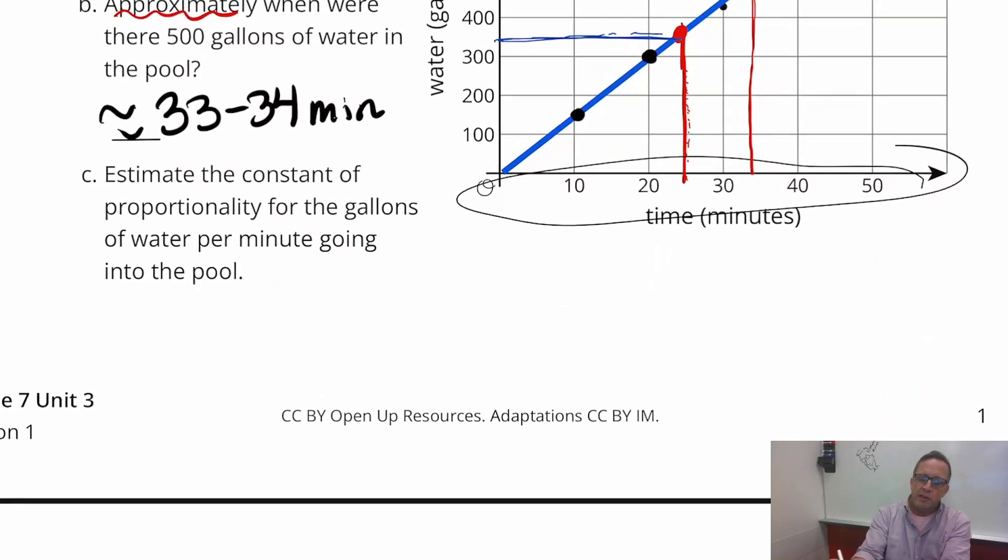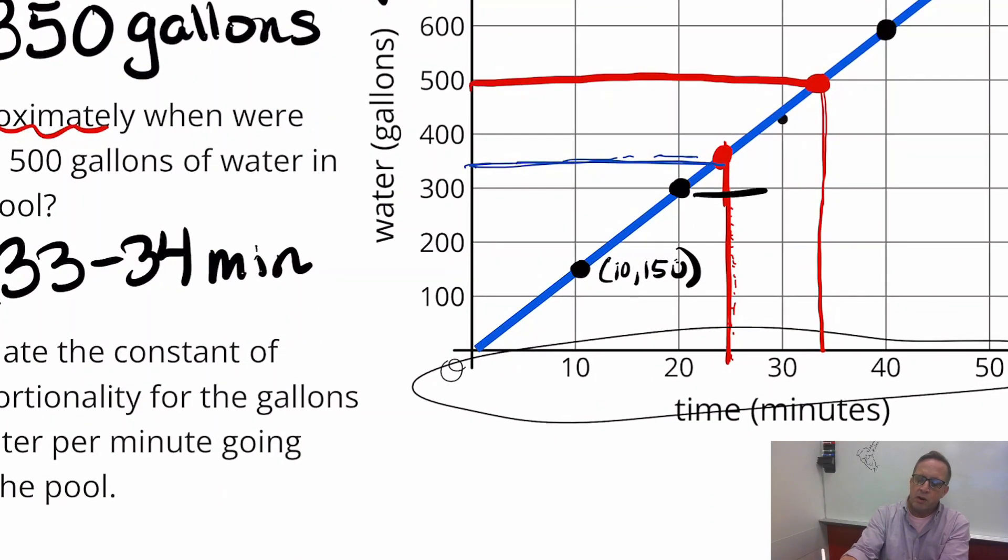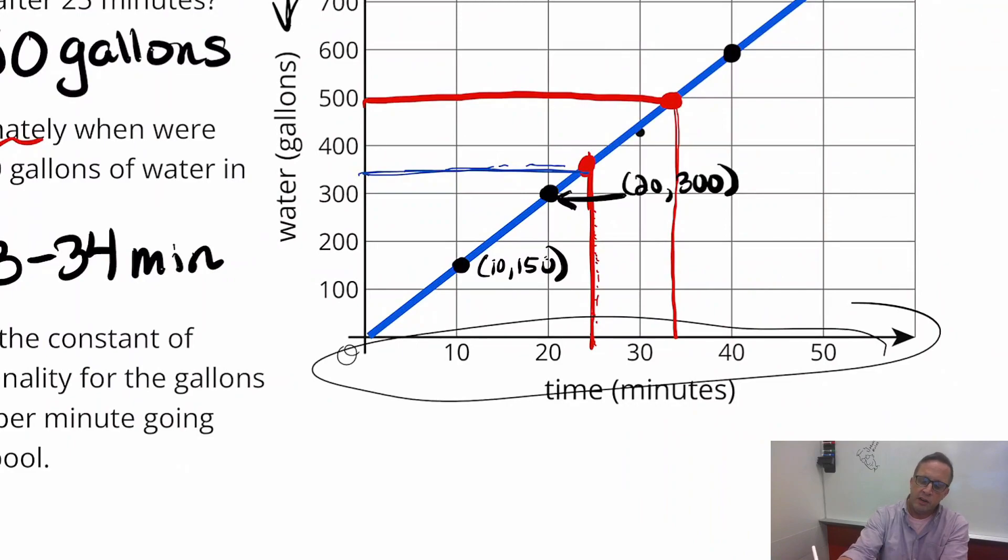Right there we have, that looks like about 150. Right here, this looks like about, so I'm going to call that 10, 150. I'm going to call this one right here 2,300. And I'm going to call this one right here 4,600.